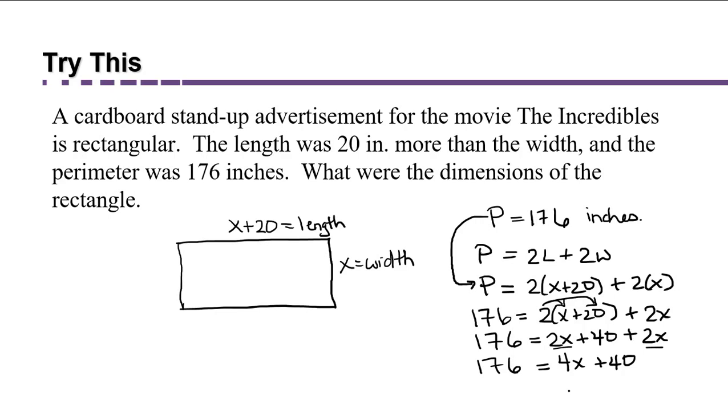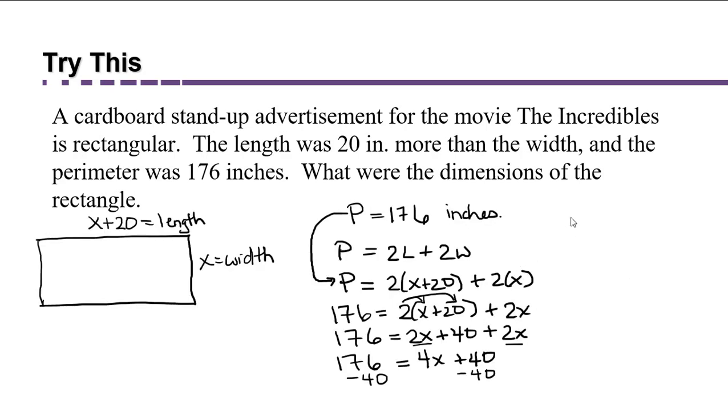And now we want to have the x's on one side and the numbers on the other. Since I have a 4x and a 40 on the right, but I only have 176 on the left, I'm going to move the 40 over to the left by subtracting it from both sides. This leaves us with 136 equals 4x. Now that 4 is being multiplied times that x. So what we're going to do is divide, do the opposite operation, divide both sides by 4.